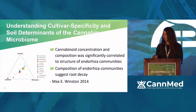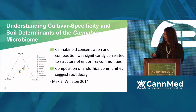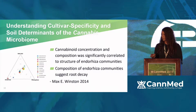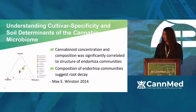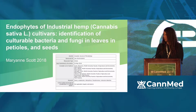The bacteria in the soil are going to help us determine what our potencies might be, what terpene or cannabinoid profiles might be present. The composition of the endorhizo communities also suggested root decay — in one of his studies, he wasn't able to get to the endorhizo root tissue until eight weeks later, which may have affected some results. But it was a really great paper, open source, and really helpful.